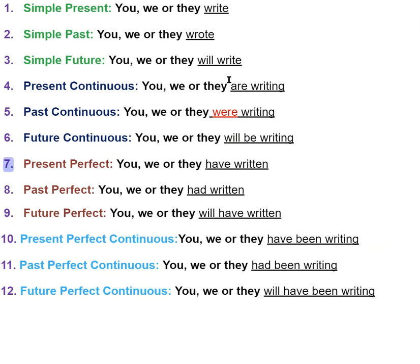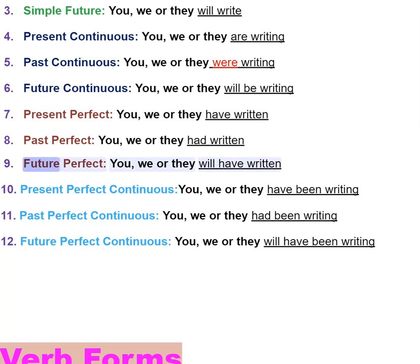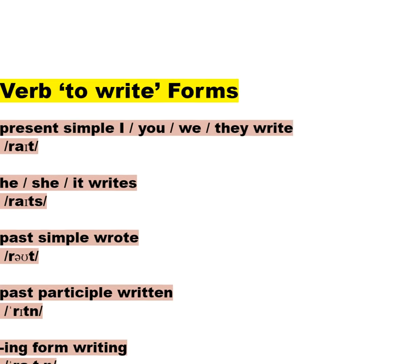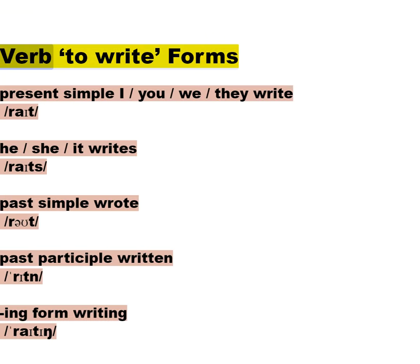Seven: present perfect — you, we, or they have written. Eight: past perfect — you, we, or they had written. Nine: future perfect — you, we, or they will have written. Ten: present perfect continuous — you, we, or they have been writing. Eleven: past perfect continuous — you, we, or they had been writing. Twelve: future perfect continuous — you, we, or they will have been writing.